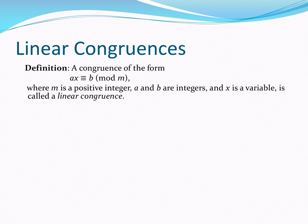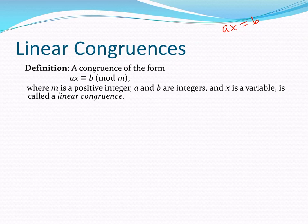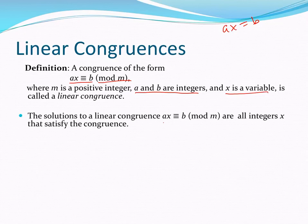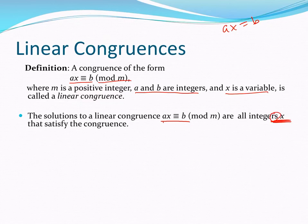What is a linear congruence? The analogy to keep in mind would be a linear equation, such as Ax equals B, where A and B are constants and X is a variable. A linear congruence is Ax congruent to B mod M, where M is always a positive integer. A and B are integers, and X is our variable, as it would be in a linear equation. The solutions to the congruence Ax congruent to B mod M are all the integers X that satisfy the congruence — notice that we talk about the solutions being plural.